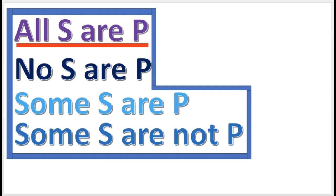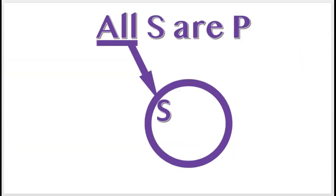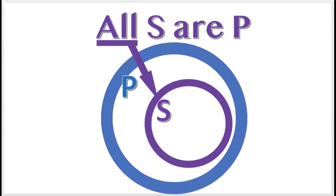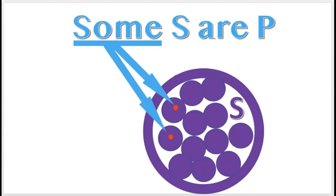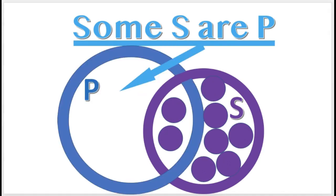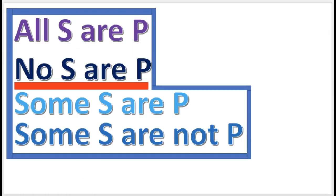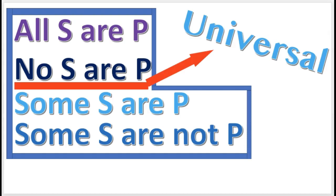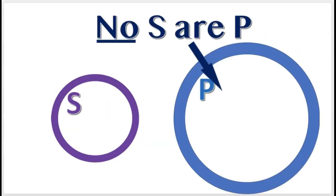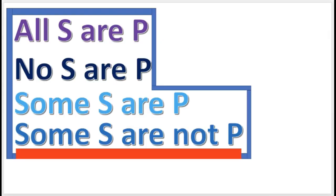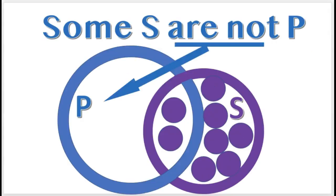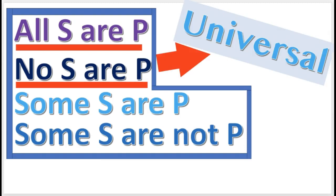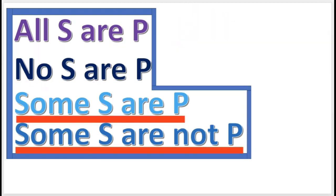All S or P is a universal proposition because it claims that every member of S is a member of P. But Some S or P is a particular proposition — it claims that only some of S is a member of P. These two propositions are universal, and these two propositions are particular.